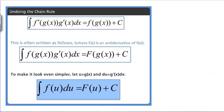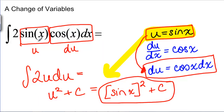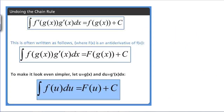Note what we've done here. We've said that if we have some function F of G of X times G prime of X that we're trying to integrate — like 2 sine of X cosine of X — if you can find the antiderivative of F, then you get the antiderivative of F with the function G plugged in. This still looks complex, which is why we like U notation: if we have a function of U times DU, then we get the antiderivative of our function with U plugged in. That's really simple.